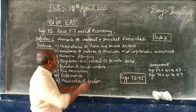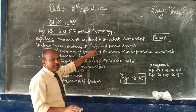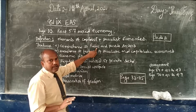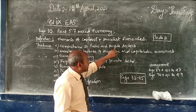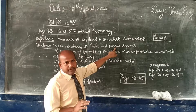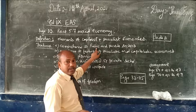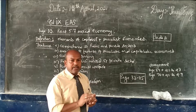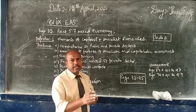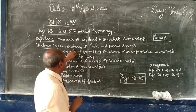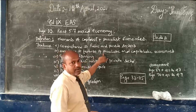Now let us come to the characteristics. The first characteristic is the coexistence of public and private sectors. You find government sectors as well as private sectors. For example, government schools and government hospitals exist alongside private schools and private hospitals. Together they exist and work for the benefit of the people as well as the nation.